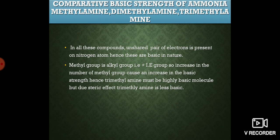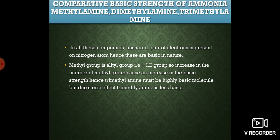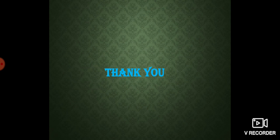Comparing the basic strength of ammonia, methyl amine, dimethyl amine, and trimethyl amine: all contain a lone pair on nitrogen, making them basic. Increasing the number of methyl groups increases basic strength due to the +I effect, so trimethyl amine should be the most basic. However, due to the steric effect of three bulky methyl groups around nitrogen, the basicity of trimethyl amine decreases. Thank you — today's lecture is now closed, and we will continue tomorrow.